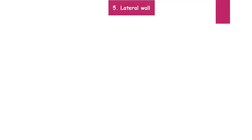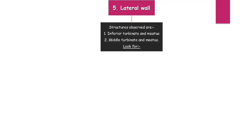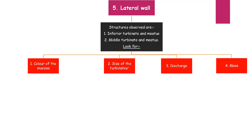The lateral wall of the nose: here we can only observe the meatuses and the turbinates. Note that the superior and supreme meatus and turbinates cannot be observed — only the inferior turbinate and inferior meatus can be seen. In these turbinates and meatuses you need to look for: color of the mucosa, size of the turbinates, discharge, and mass. Normal color of the mucosa is pinkish.